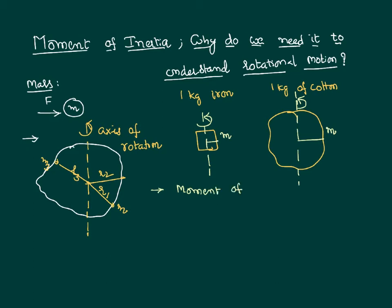Taking all these things into consideration, a term called moment of inertia is defined. Moment of inertia is defined as the summation of the product of the mass of each particle with the square of its distance from the axis of rotation: m1·r1², m2·r2², m3·r3², and so on. It can be written as I = Σmr².